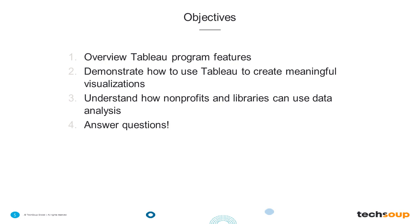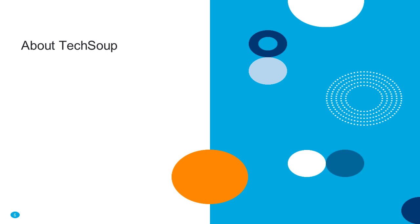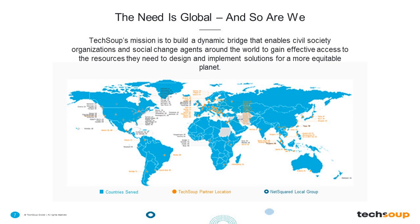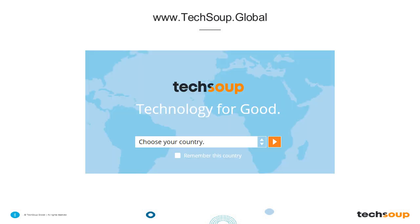Before I turn it over to Jordan, I'm going to talk a little bit about TechSoup. TechSoup is headquartered in San Francisco, California, and we have folks joining us today from all over the world. We're a 501(c)(3) nonprofit like many of you joining us today. What we do is work to empower organizations around the world to help you get the latest tools, skills, and resources to achieve your mission. We serve almost every country in the world and have 62 partner NGOs. We also have a website for folks outside of the U.S. at www.TechSoup.Global, where they can access technology donations.